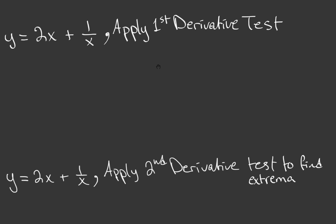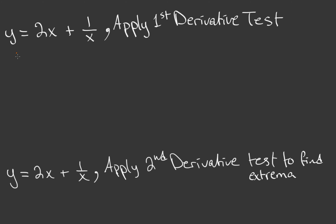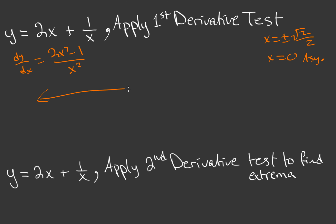Now let's apply the first derivative test. Our first derivative dy/dx = (2x² − 1)/x² has critical points at x = ±√2/2, and x = 0 is an asymptote. We draw a number line labeling negative √2/2, zero, and positive √2/2 — giving us four intervals to analyze. At each critical point the slope is zero, which is what it means to have a critical point.